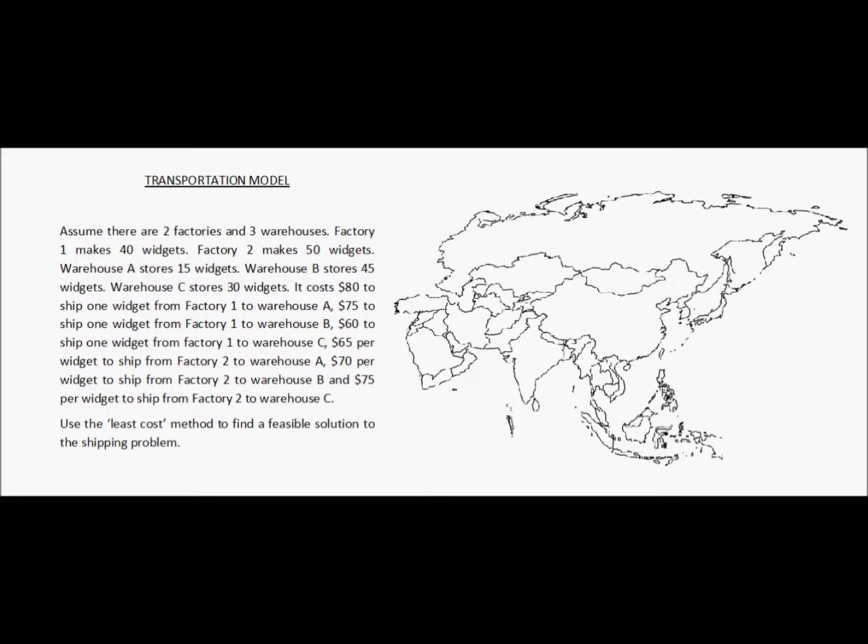It costs $80 to ship one widget from factory one to warehouse A, $75 to ship one widget from factory one to warehouse B, and $60 to ship one widget from factory one to warehouse C. It costs $65 per widget to ship from factory two to warehouse A, $70 per widget from factory two to warehouse B, and $75 per widget from factory two to warehouse C. Use the least cost method to find a feasible solution to the shipping problem.